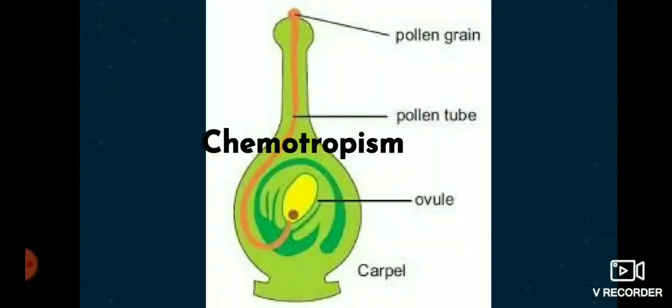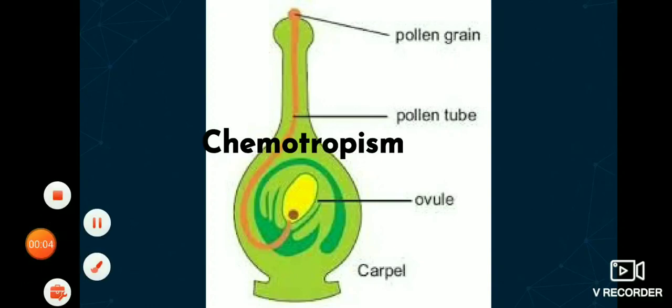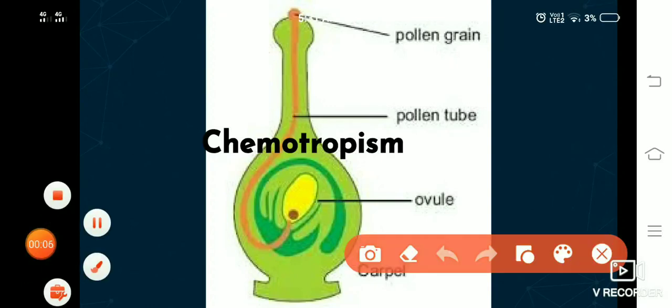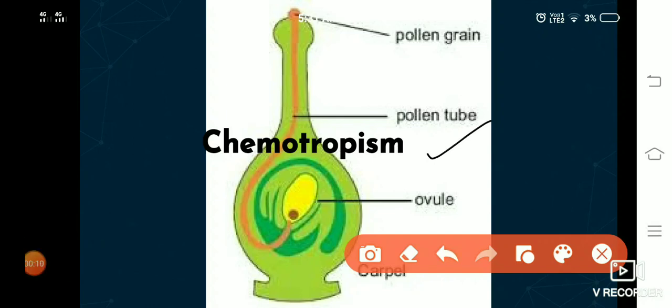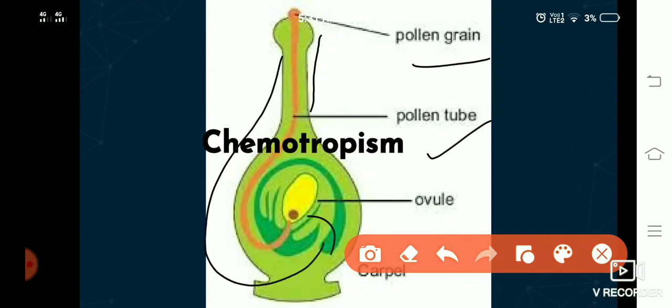The directional movement of a plant in response to a chemical is called chemotropism. A very good example is the growth of the pollen tube during the fertilization process. The pollen tube grows towards the ovule because of some chemical production over there. This process is called chemotropism.